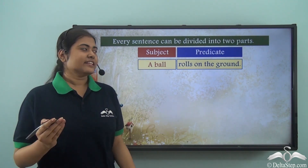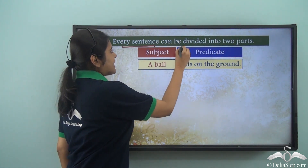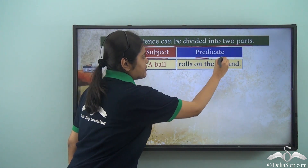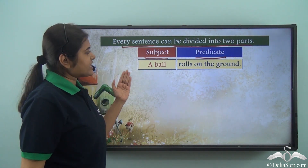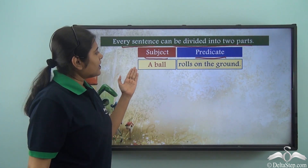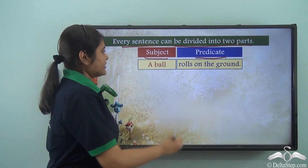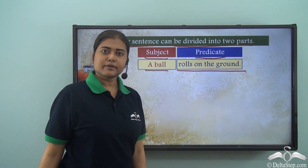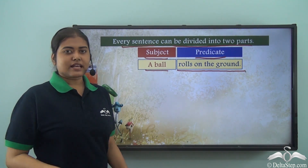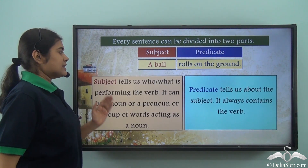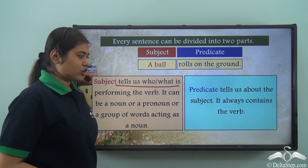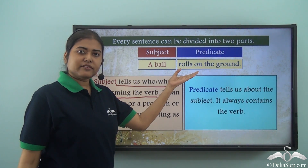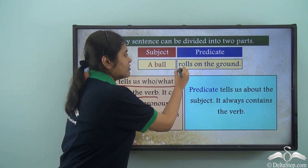We have already learnt that every sentence can be divided into two parts: the subject and the predicate. So if we take an example of a sentence, 'A ball rolls on the ground.' Here, 'a ball' is the subject, whereas 'rolls on the ground' is the predicate. Now what is a subject? Subject tells us who or what is performing the verb. So in this case, 'a ball' is performing the verb 'rolls'.